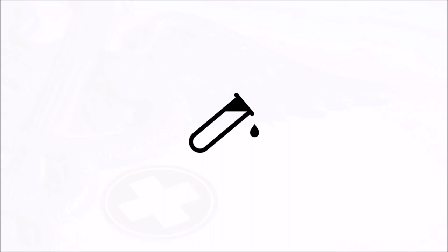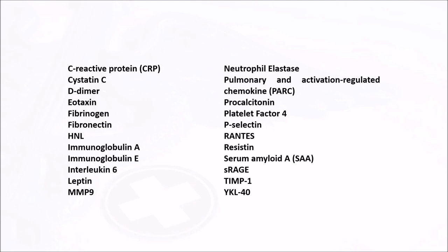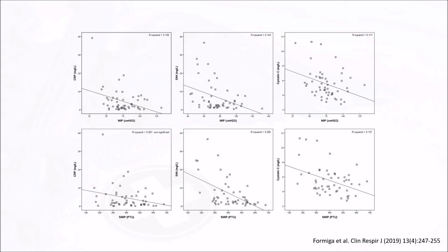Once we obtained that information, we sent the subjects to a lab so they could undergo blood sampling for 23 inflammatory markers, including acute phase proteins, cytokines, and adipokines. All of these markers were obtained blinded from the respiratory muscle assessment, and three of them caught our attention: levels of C-reactive protein (CRP), Cystatin C, and Serum Amyloid A (SAA) were significantly and inversely associated with how well the inspiratory musculature was functioning.